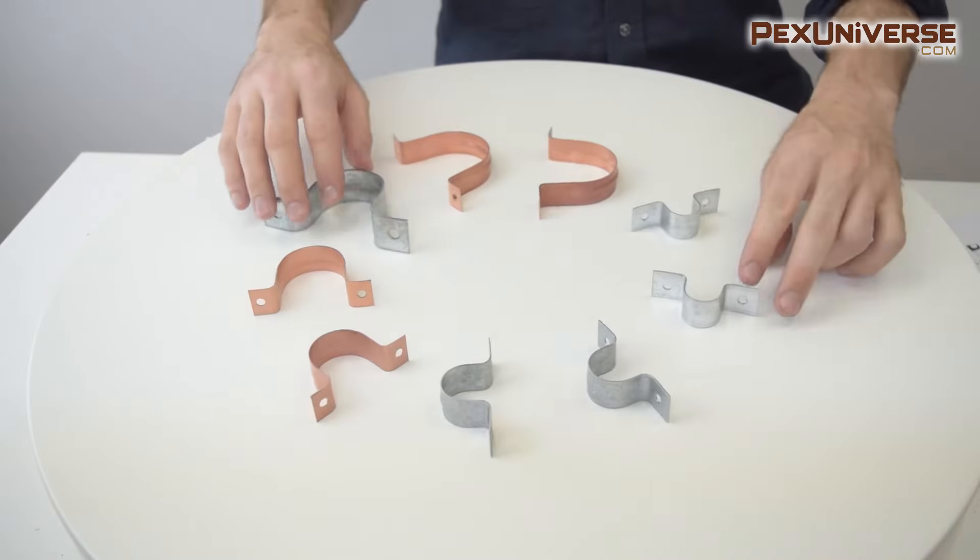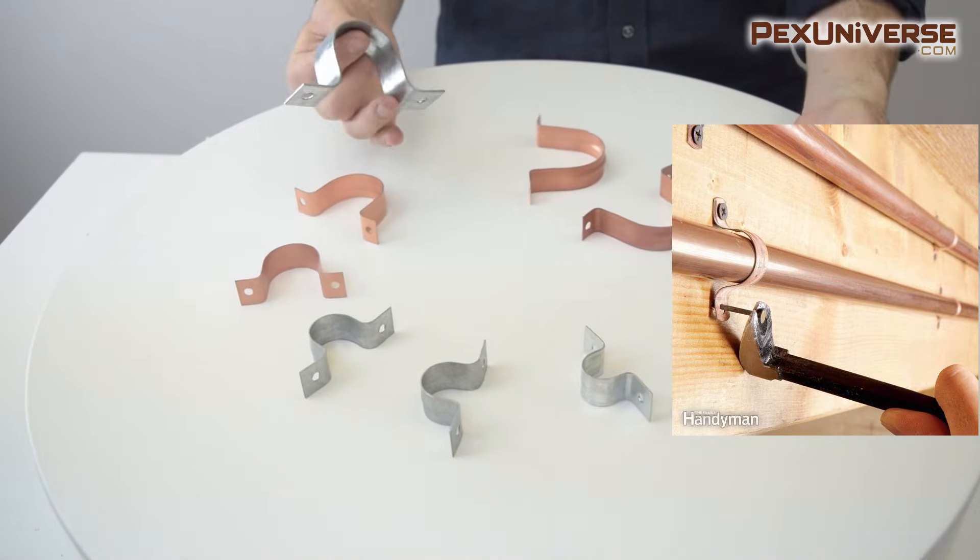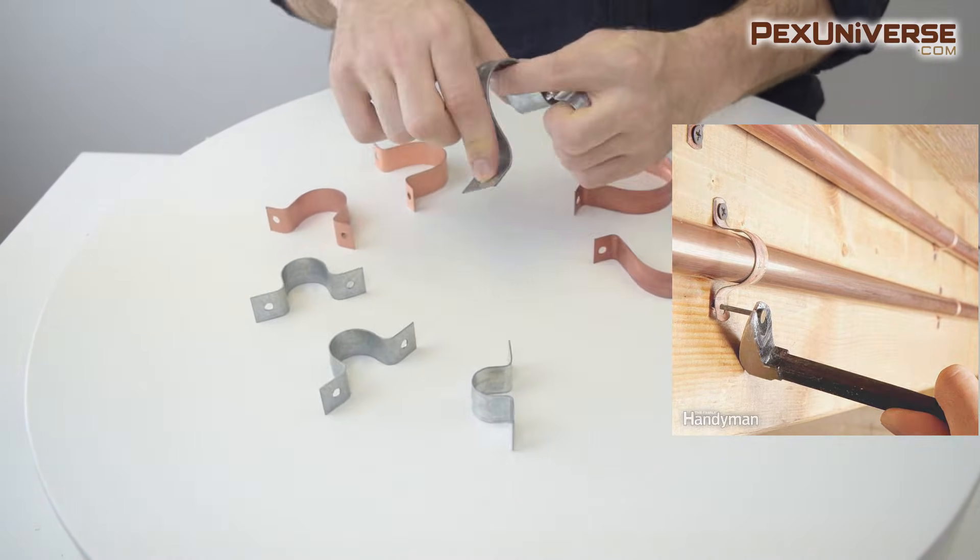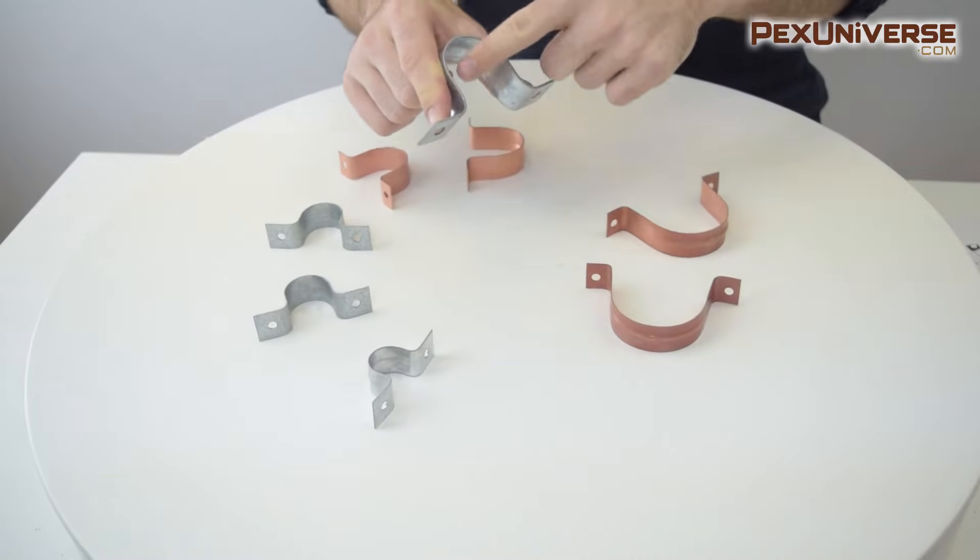Metal pipe straps will attach the pipe flush to the mounting surface so that there's zero clearance and all you need for these is some screws right here and then the pipe will be nice and secure.